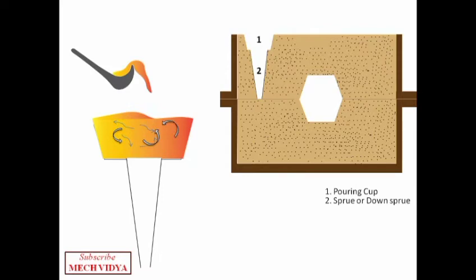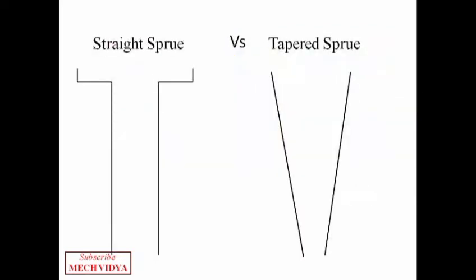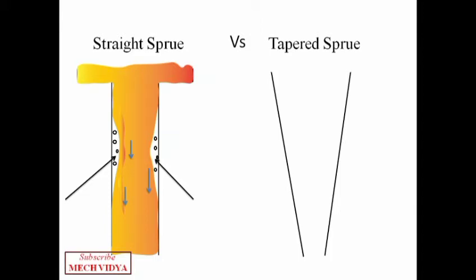Let us see. Suppose the sprue is made straight as seen here. In this case, the molten metal while flowing will tend to get separated from the inner walls of the sprue. As a result, some air aspiration will take place and the molten metal will carry these air bubbles along with it into the mold cavity. The result will be a defective casting because we will have air pockets in the casting.